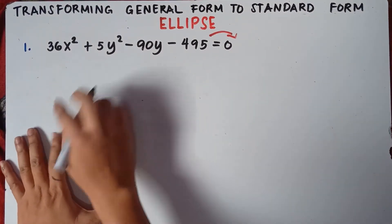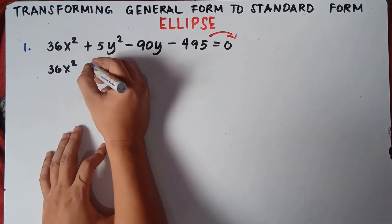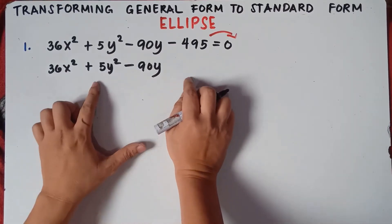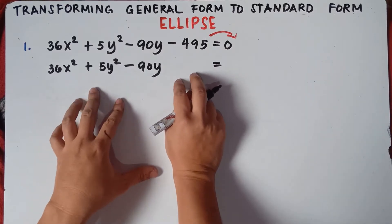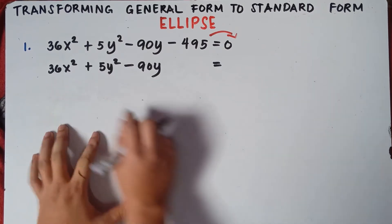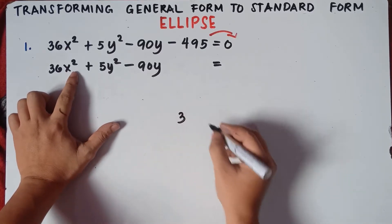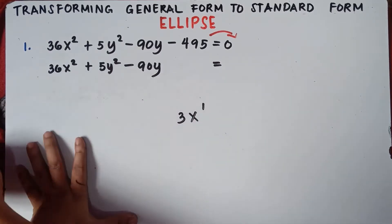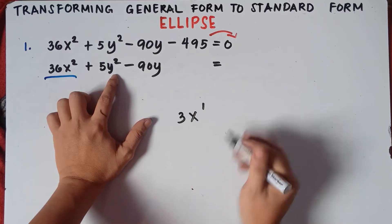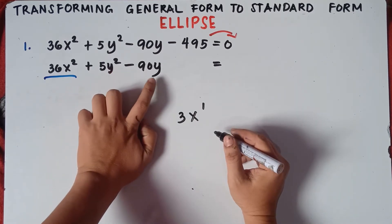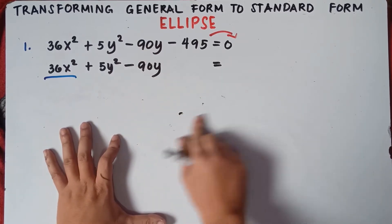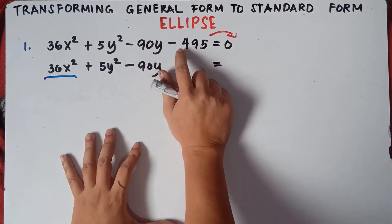First, copy 36x squared, then copy plus 5y squared minus 90y and put a space, because we will do completing the square and will be adding a new constant. For the x squared term, we cannot do completing the square because we don't have a linear term for x. So we just simply copy 36x squared. Then transpose negative 495 from left to right, making it positive 495.